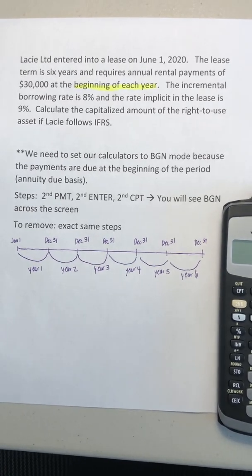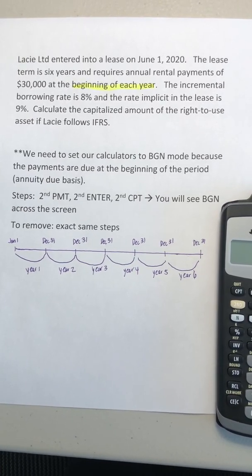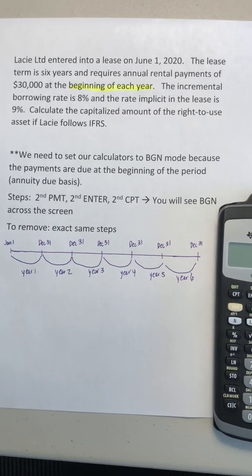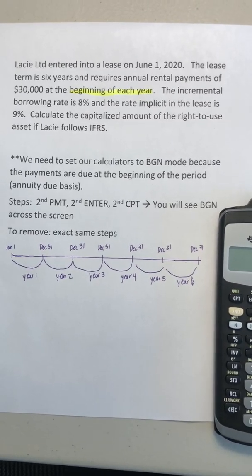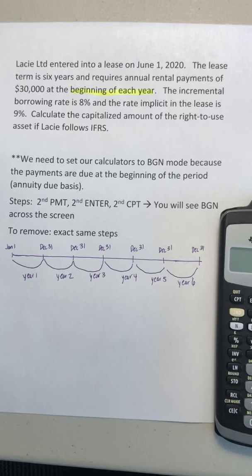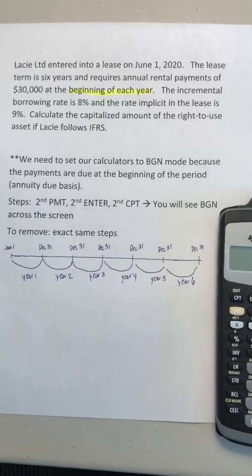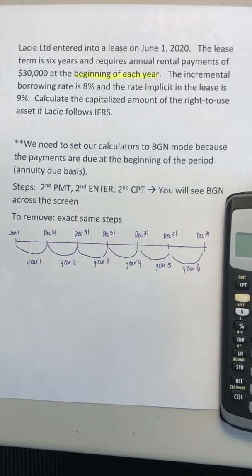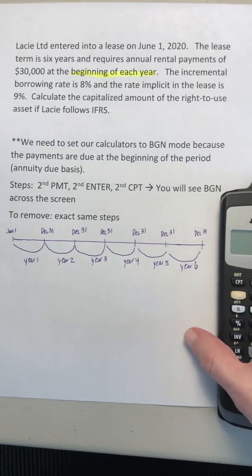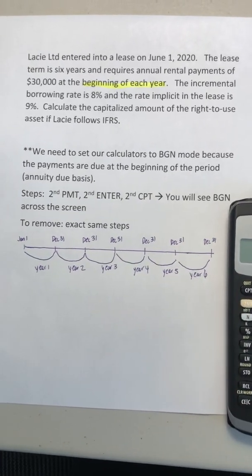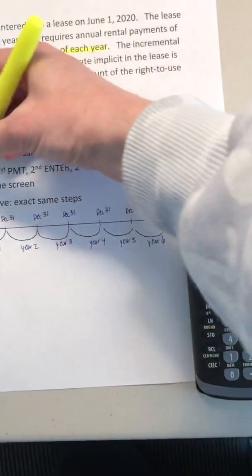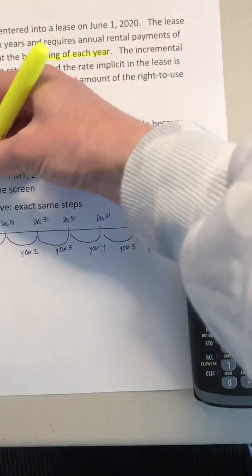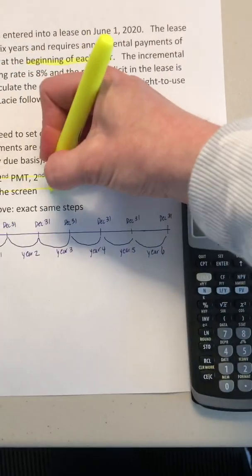We need to tell our financial calculators that the payments are due at the beginning of the period. How we do that is by setting begin mode on our financial calculators, and this will tell our calculators that the payments are due at the beginning of each period. Let's go ahead and do that.